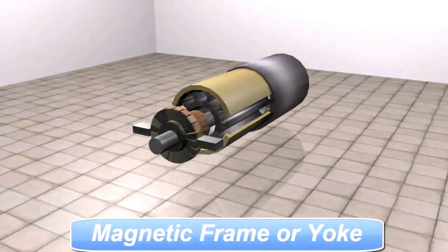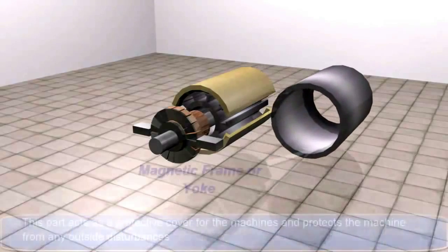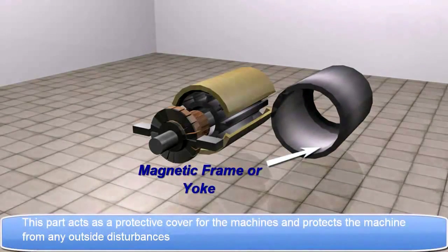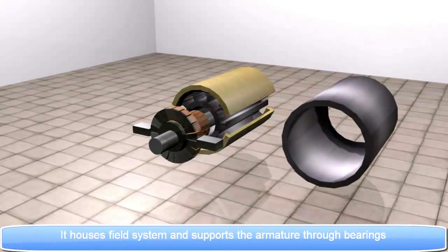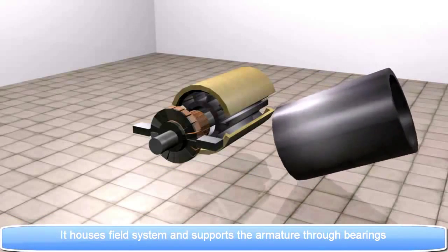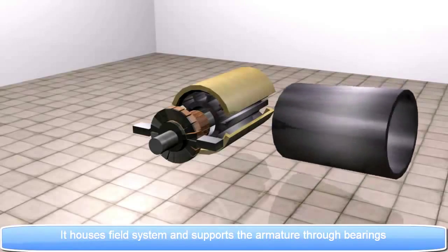Magnetic Frame or Yoke. This part acts as a protective cover for the machines and protects the machine from any outside disturbances. It houses field system and supports the armature through bearings.